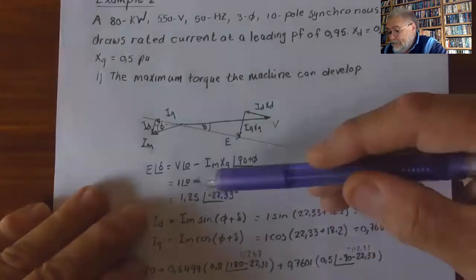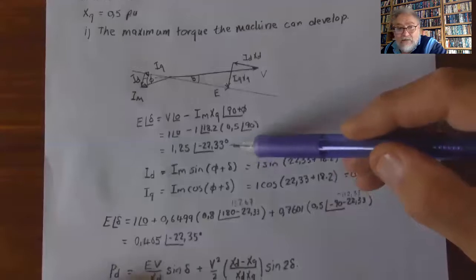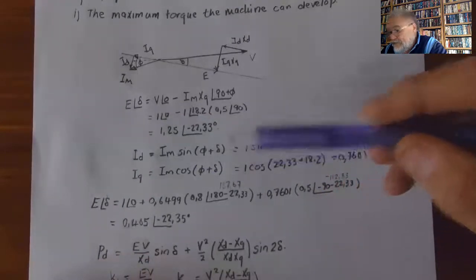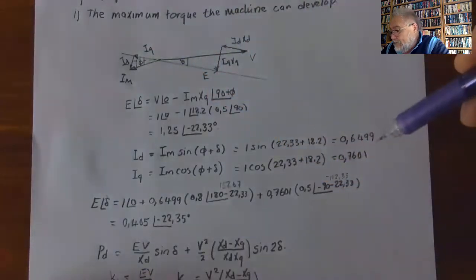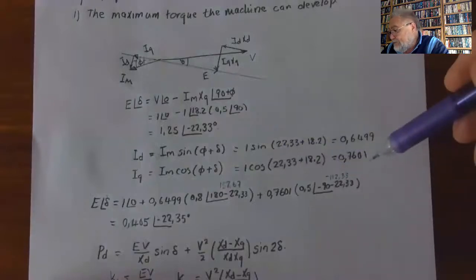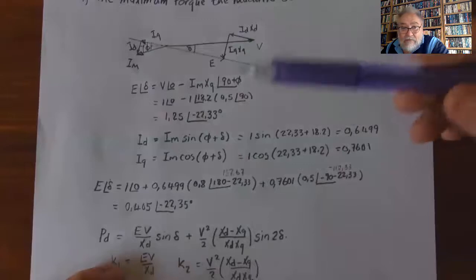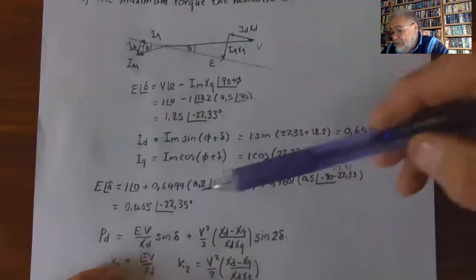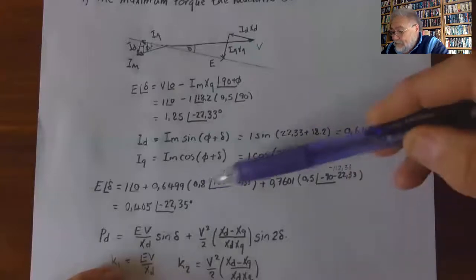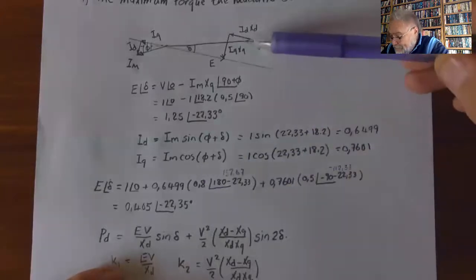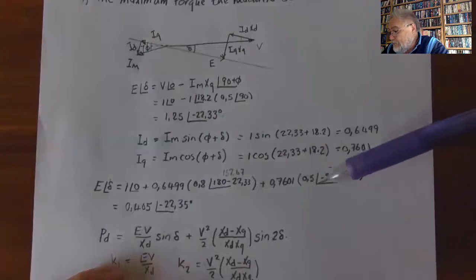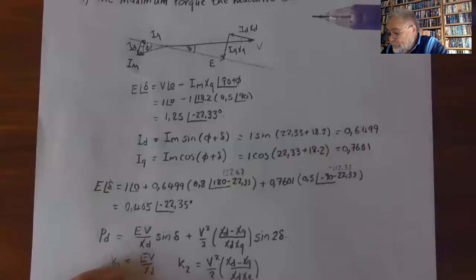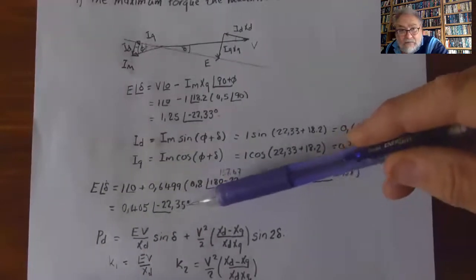Id = Im·sin(φ + δ) — again the sum of the two angles — giving Id = 0.6499 and Iq = 0.7601. Summing all phasor components: E = 1∠0 + 0.6499 × 0.8∠(180° − 22.3°) + … gives 0.405∠22.35°, confirming the angle.